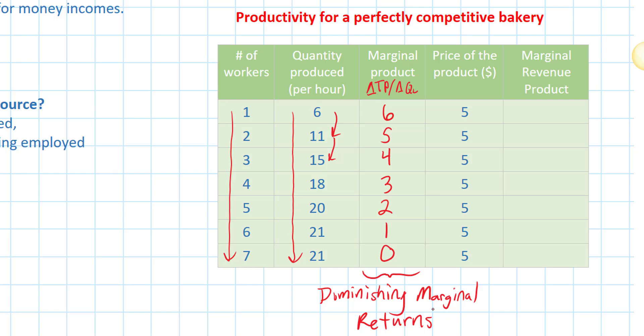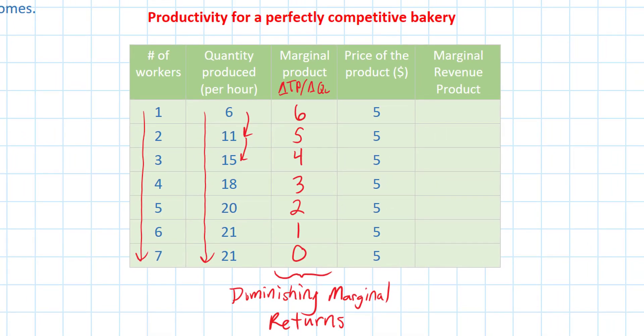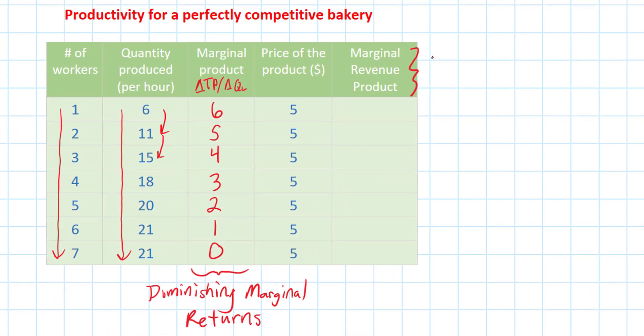As we hire more workers, they just get in each other's way. You've probably heard the term 'too many cooks spoil the broth' — this is the quantitative illustration of that concept. So the question now is how much should the firm be willing to pay each additional worker? That's where the term marginal revenue product comes in. Marginal revenue product is simply the marginal product of labor times the price of the good being produced.